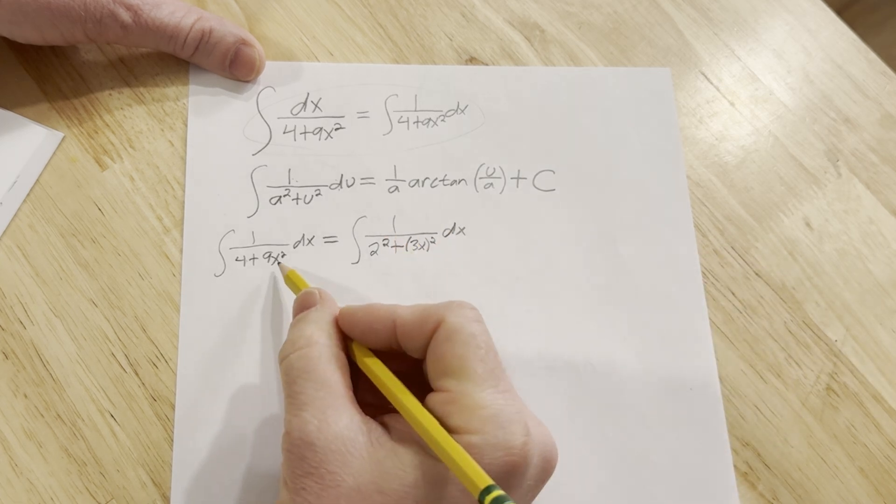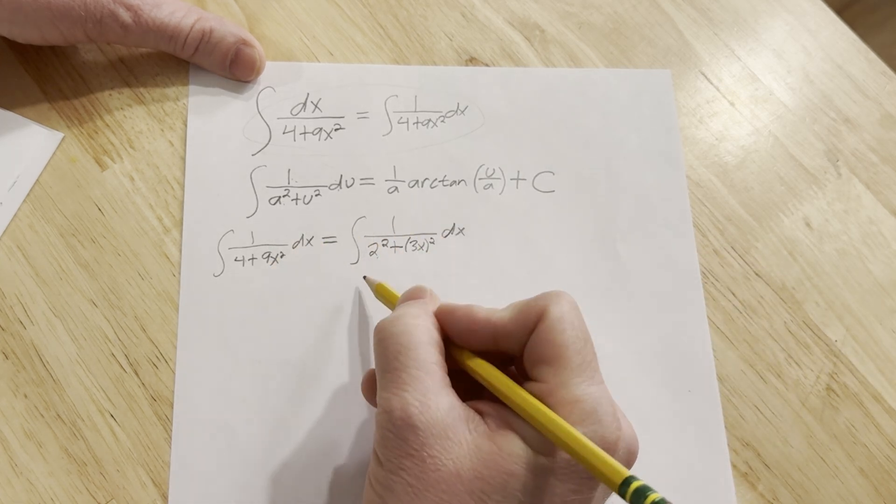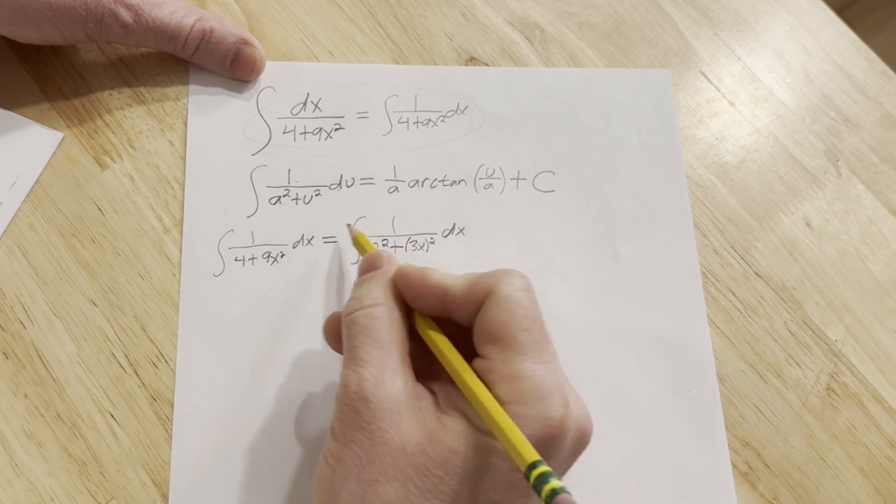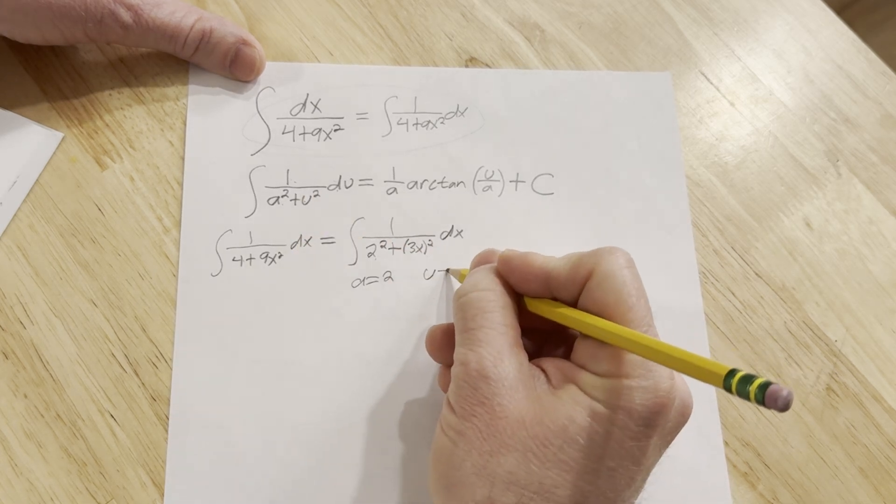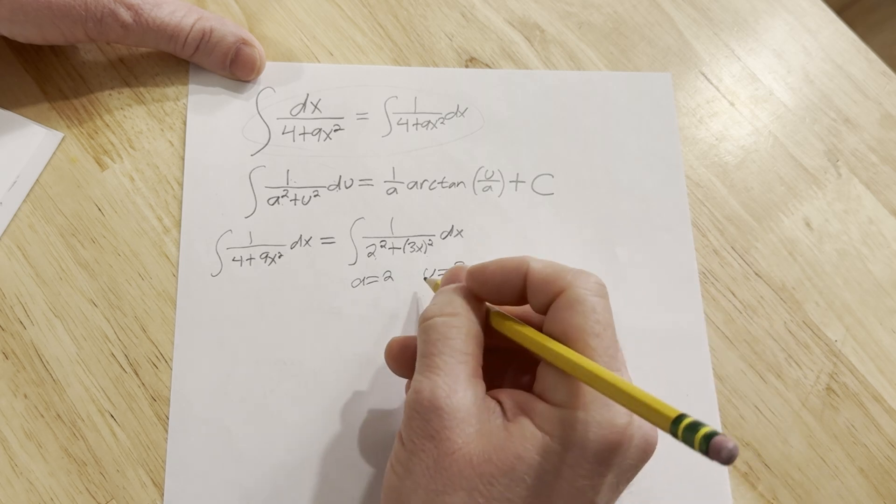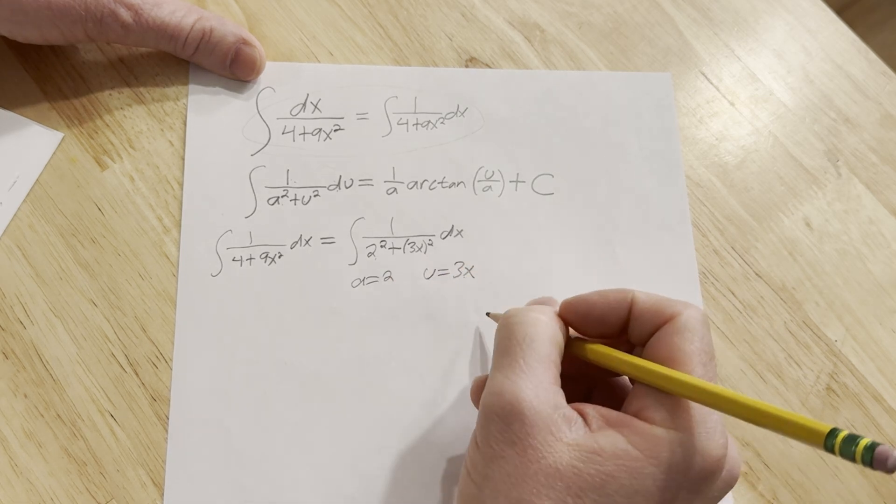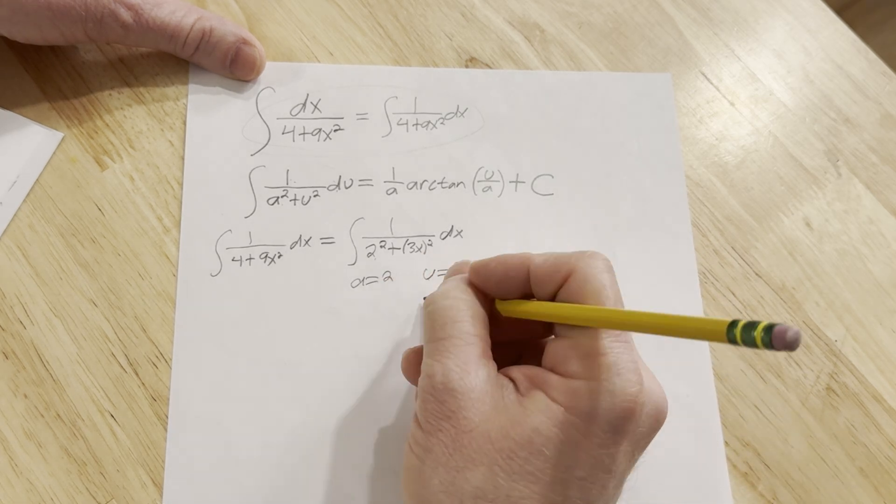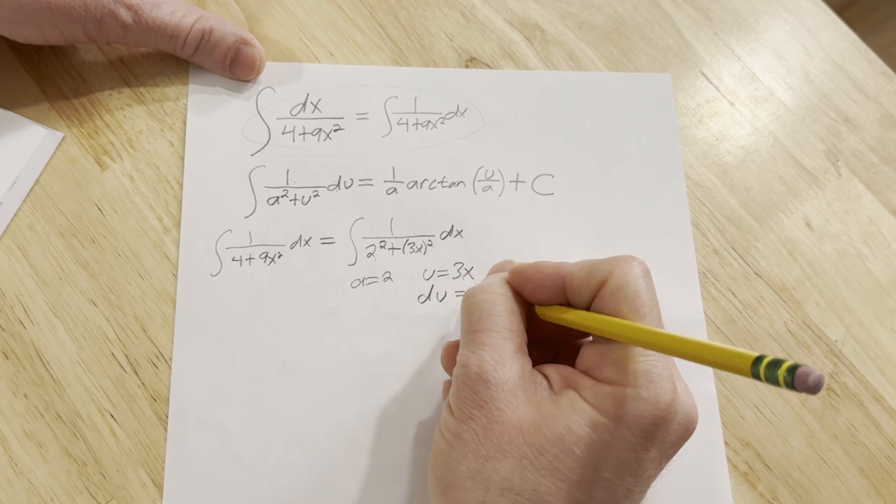So now you see it kind of matches the formula. You see a is 2, and then you see that u is going to be 3x. And that basically tells us our substitution. Well, now we have to make a u substitution here. So u is equal to 3x, taking the derivative of both sides gives us du equals 3 dx.